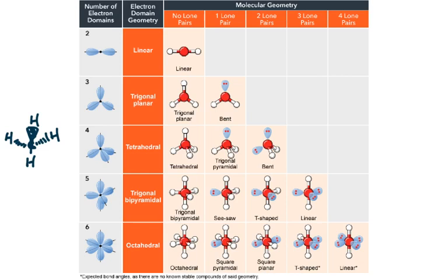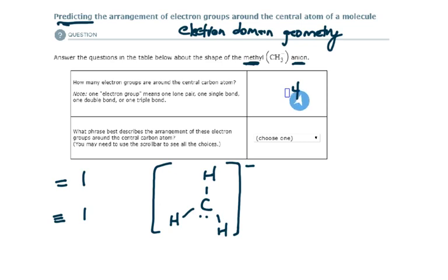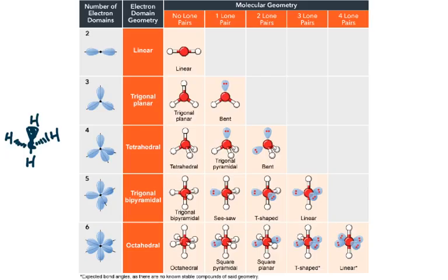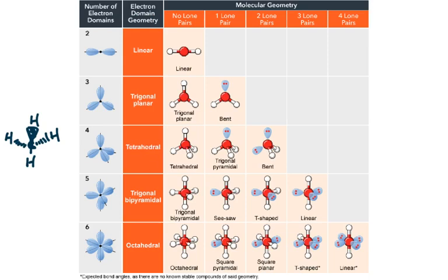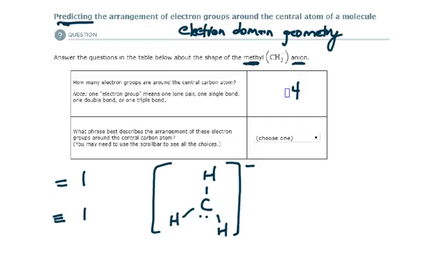We determined that the electron domain geometry is tetrahedral, and it's very easy to determine that. You can use this table or chart: if it's got four electron domains, the electron domain geometry is tetrahedral. Simple as that. You'll find tetrahedral in the drop-down box and you're done.